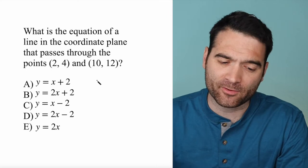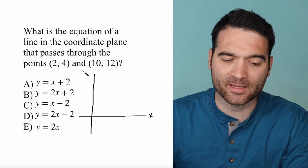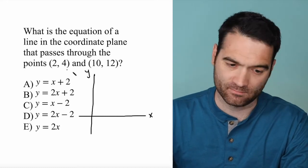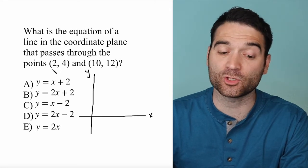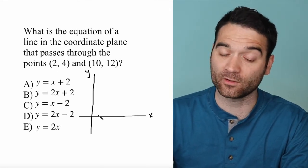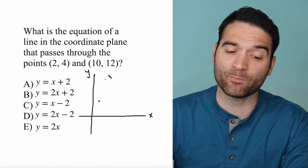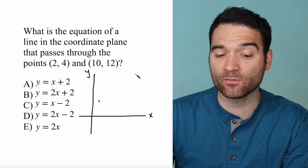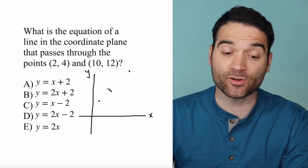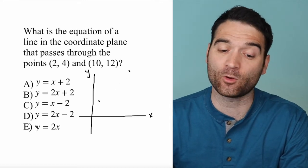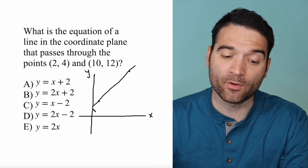As a reminder, the x-y coordinate plane tells us that any point in this plane can be represented with an x and a y value. In this case, the point (2, 4) is 2 to the right and 4 up. And the point (10, 12) would be 10 over and 12 up. The instructions are to identify which one of five equations describes the line that goes through both of these points.